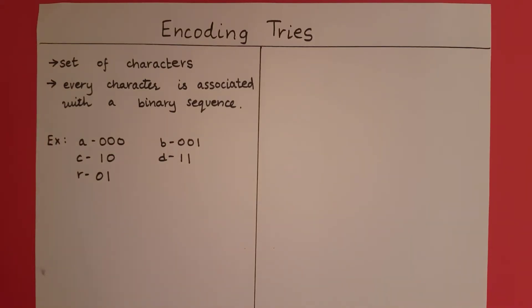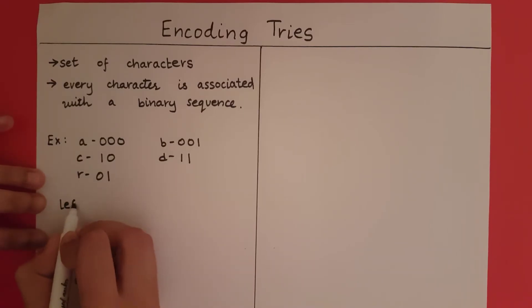Now I have to construct a trie such that I represent both the characters and the binary sequence. So how I am going to do that is whenever I traverse to the left of the binary tree or the trie in this case, I am going to add a 0 to my binary sequence. If I go right, I am going to add a 1 to my binary sequence.